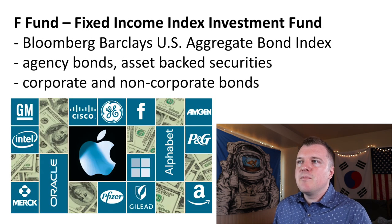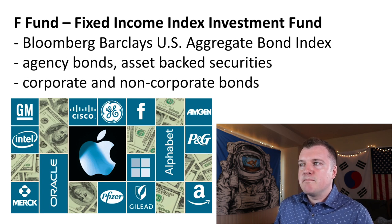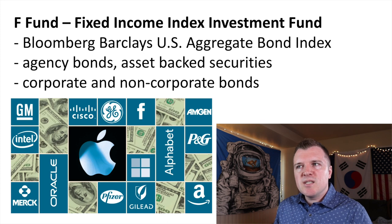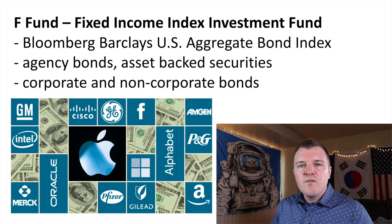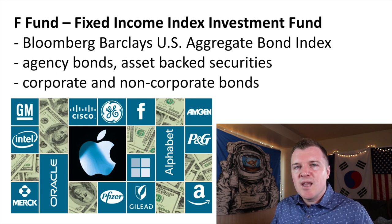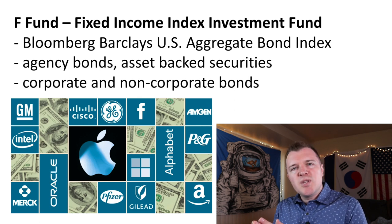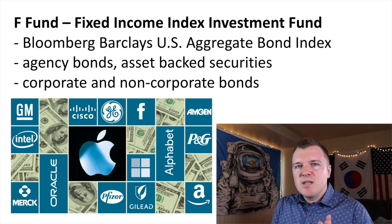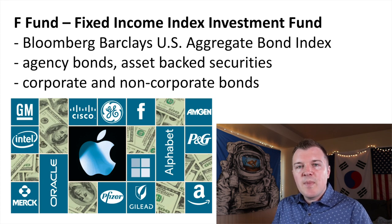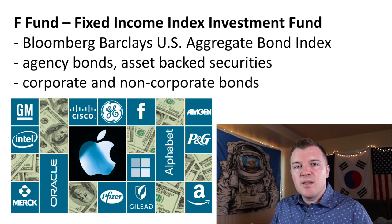The F fund is the Fixed Income Index Investment Fund, and this is tracked by the Bloomberg Barclays U.S. Aggregate Bond Index. These are agency bonds, asset-backed securities, and corporate and non-corporate bonds. All you need to know is that sometimes municipalities or corporations will issue debt in the form of bonds in order to raise more money. They do this instead of issuing more shares — it's just a way for a company, municipality, or agency to raise money, and like government bonds, they agree over a certain amount of time to pay them back with interest.